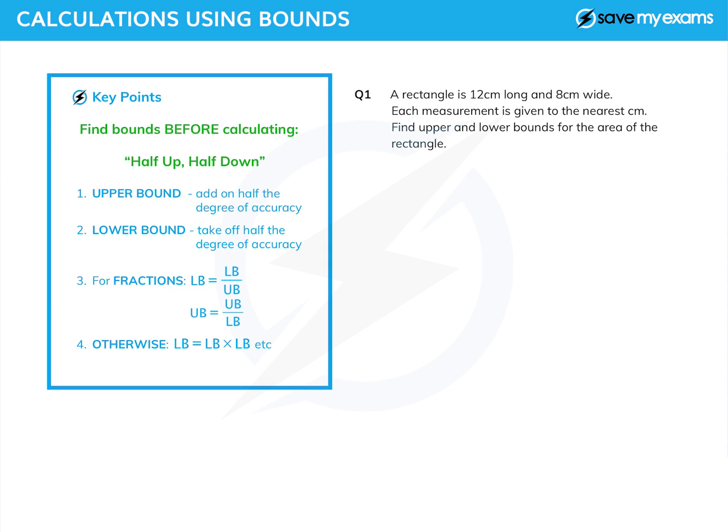So let's have a look at a couple of questions which will get gradually harder. The first one: we have a rectangle which is 12 centimeters by 8 centimeters, and each measurement is given to the nearest centimeter. So what we need to do is find upper and lower bounds for the area of the rectangle.